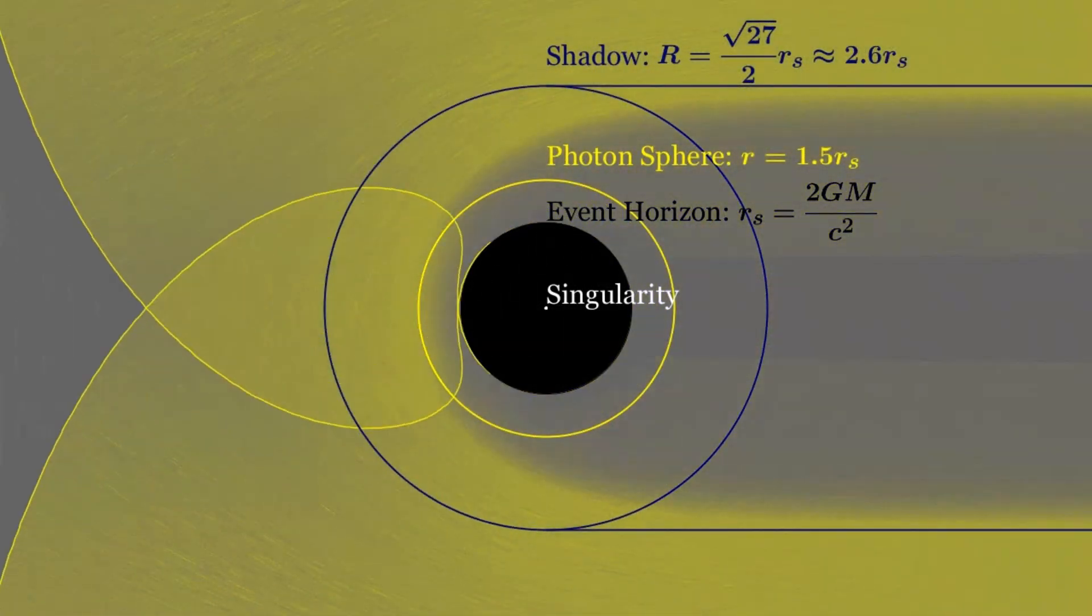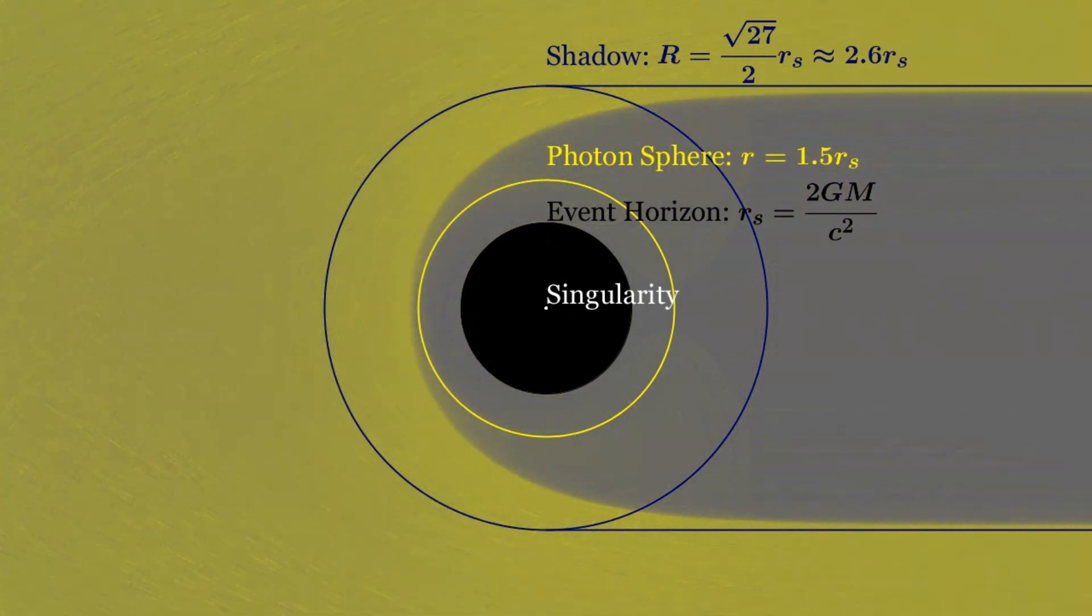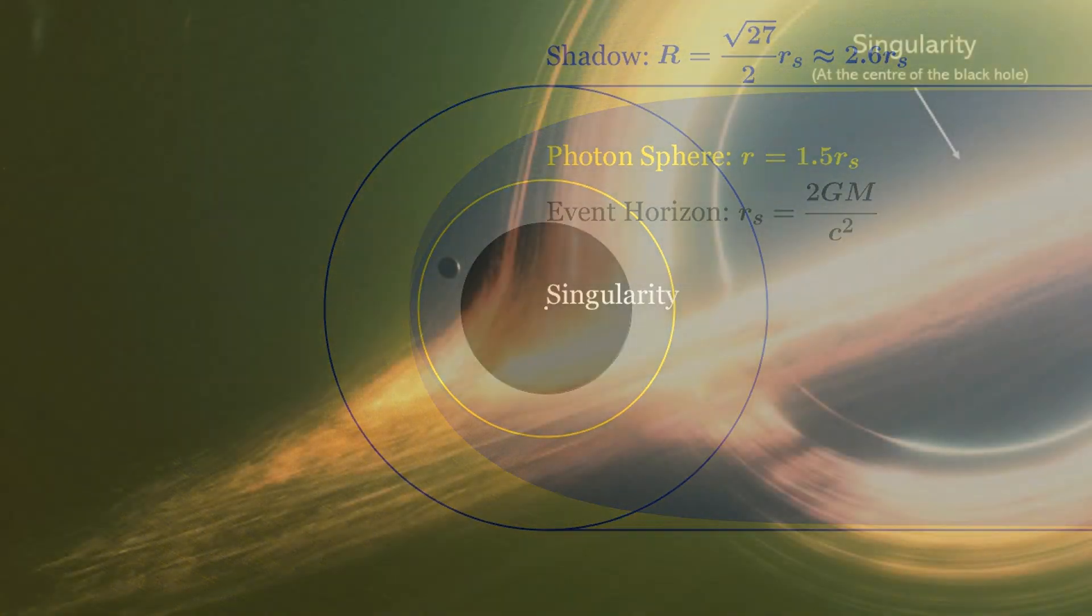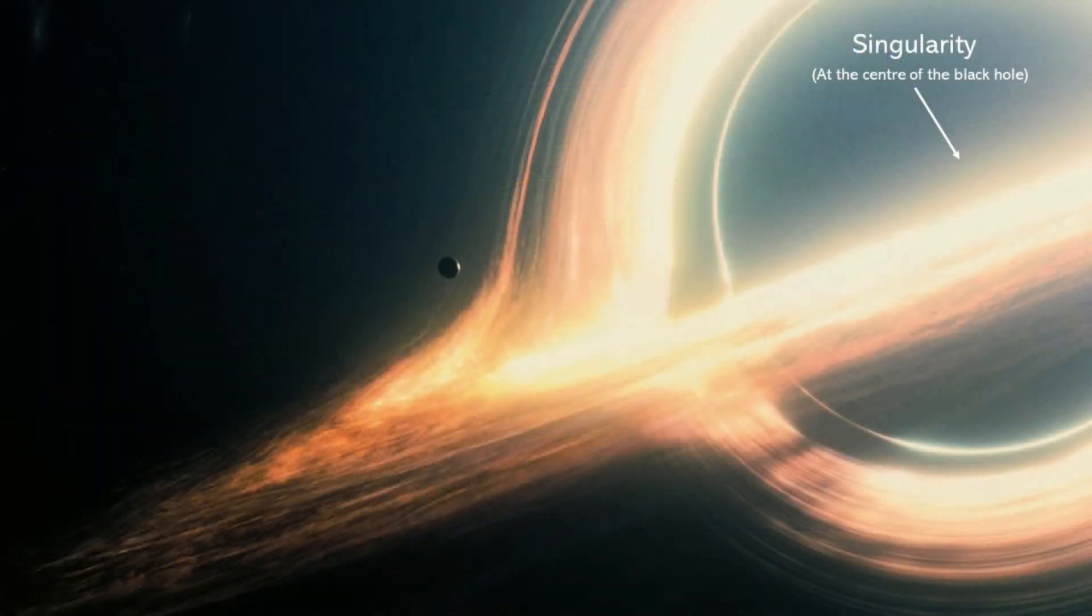The singularity is located at the very center of the black hole, and it is surrounded by the event horizon, which is the boundary beyond which nothing can escape the black hole's gravitational pull. The concept of singularity is a prediction of Einstein's theory of general relativity.